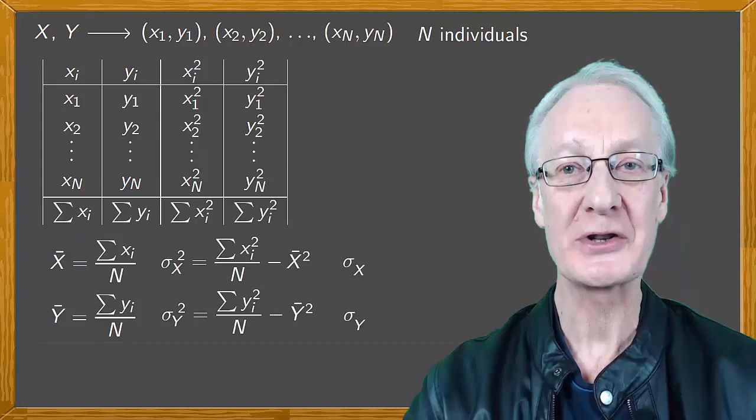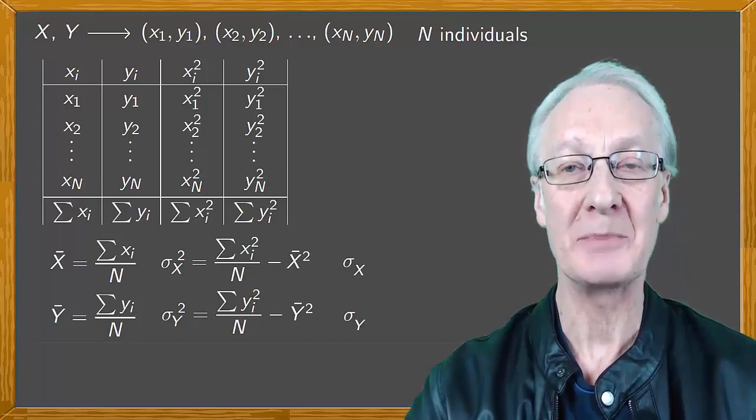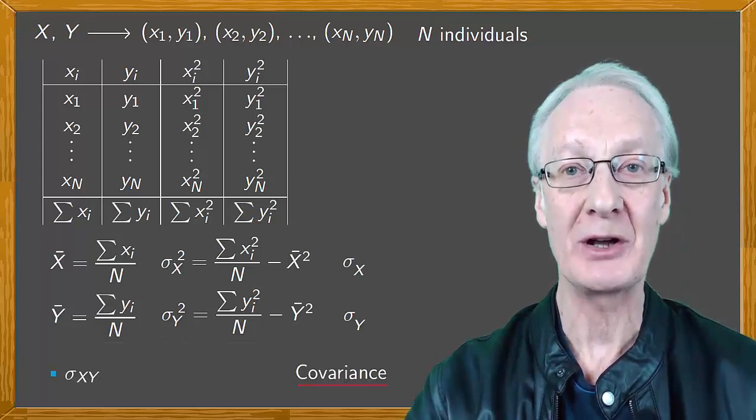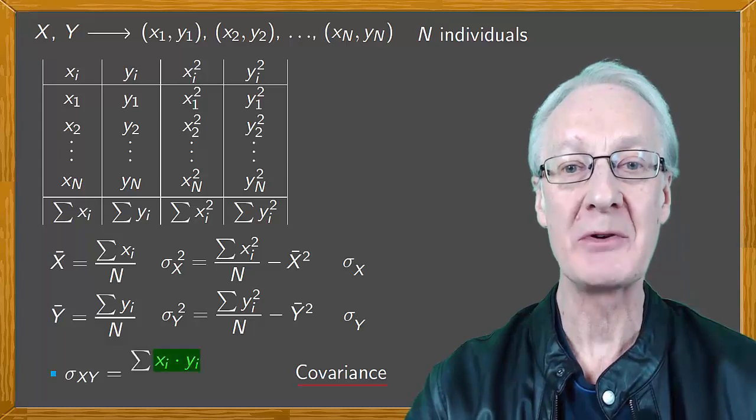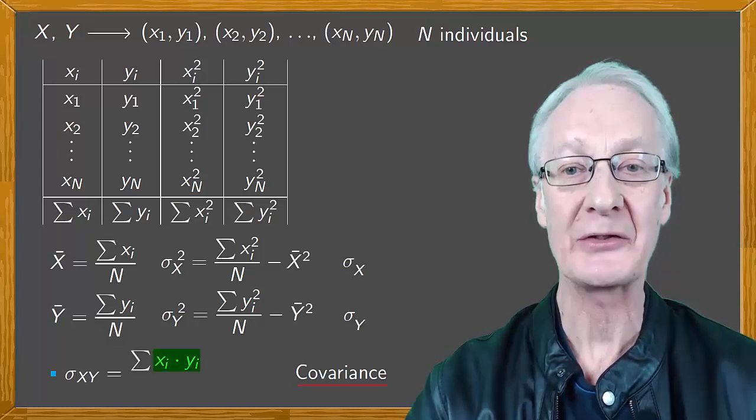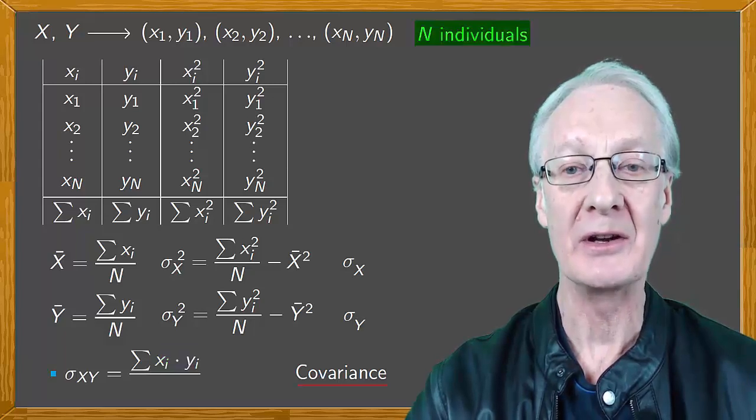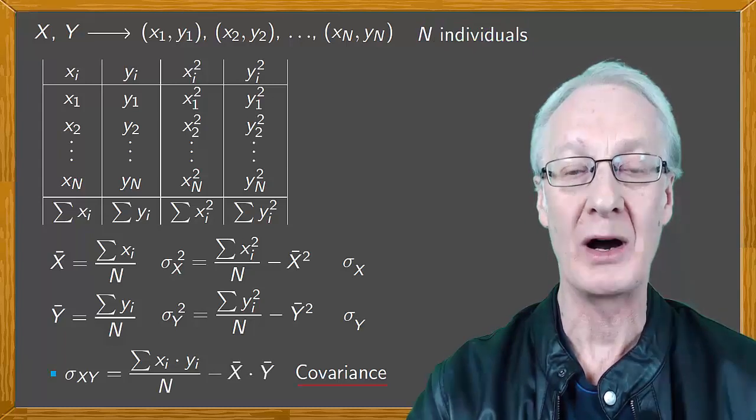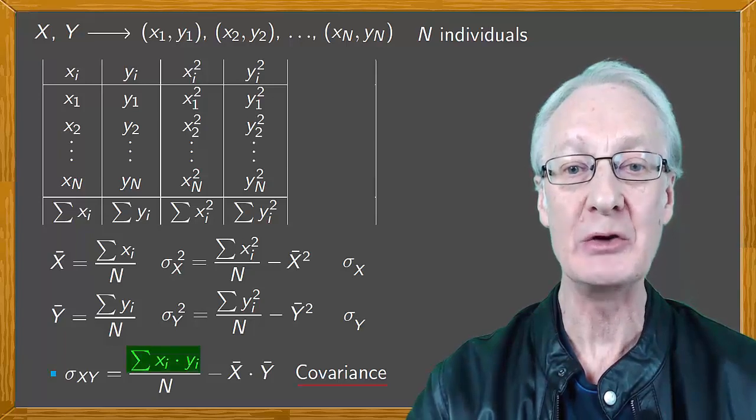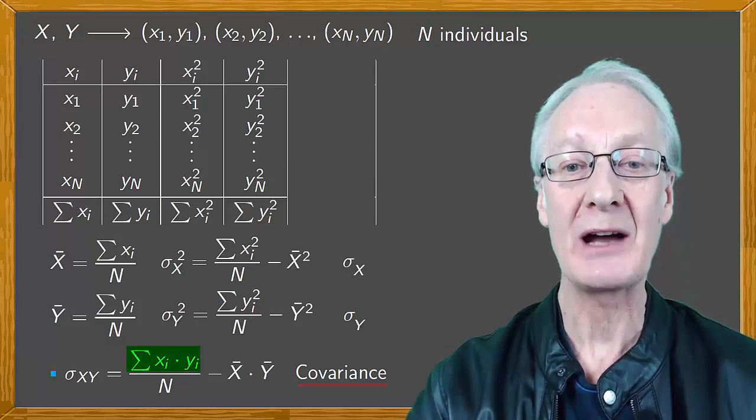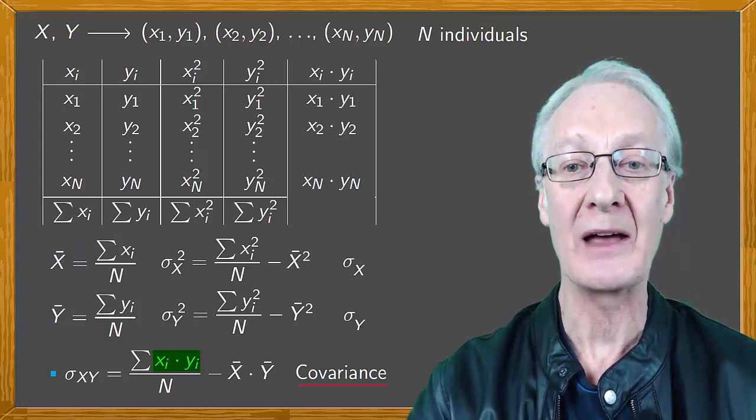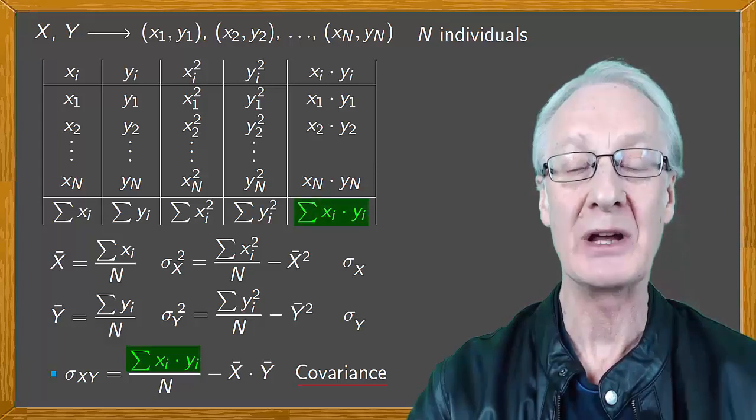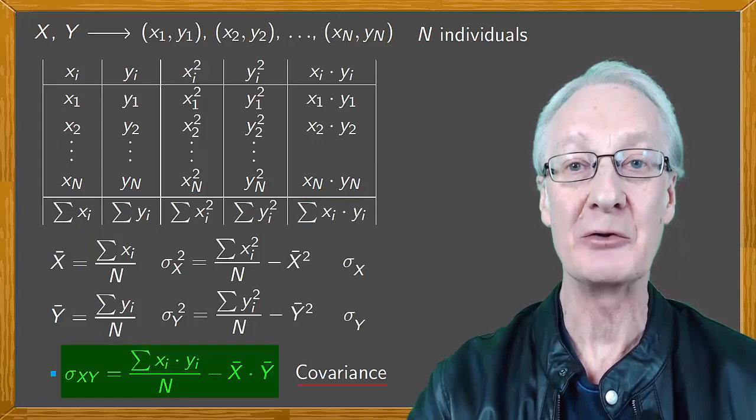Now let's introduce the first of the coefficients that measure the relationship between the variables x and y, the covariance, which we'll denote by sigma xy. Covariance is the sum of the products of the corresponding data xi times yi divided by the number of data n minus the average of x times the average of y. To calculate it, we add a new column to the previous table in which we calculate the products of xi and yi and then write the sum of these at the bottom of the column. Then we put this value in the formula just mentioned to get the value of the covariance.